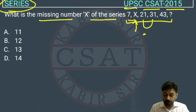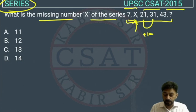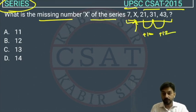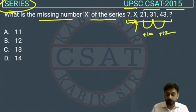The difference between 21 and 31 is plus 10. Then 31 to 43 is plus 12. So following this pattern, the difference before 21 should be plus 8 — meaning the difference between x and 21 will be plus 8.